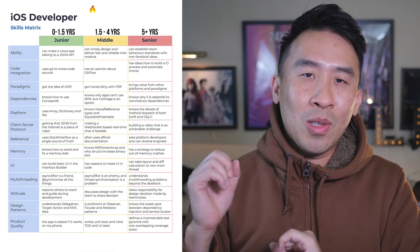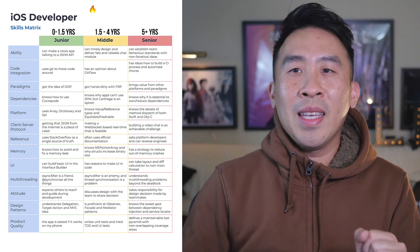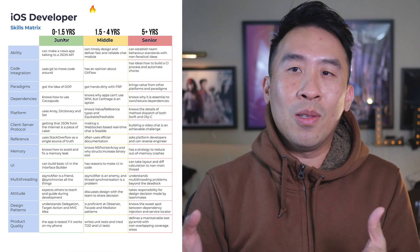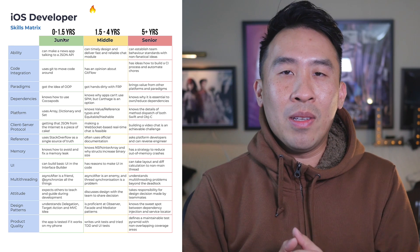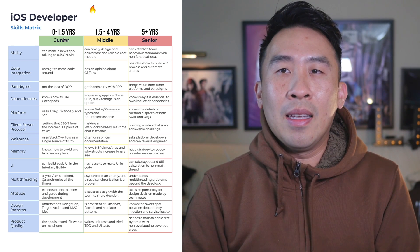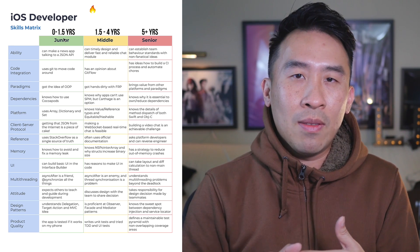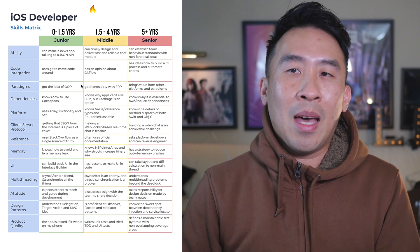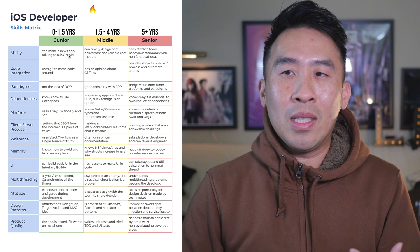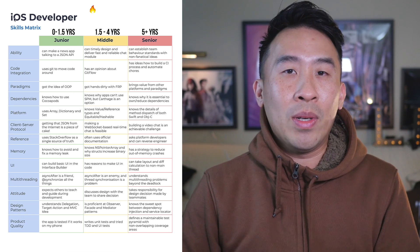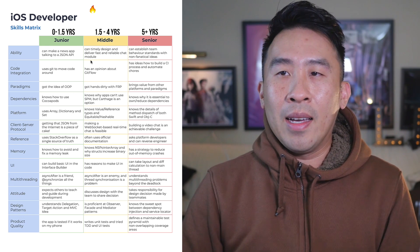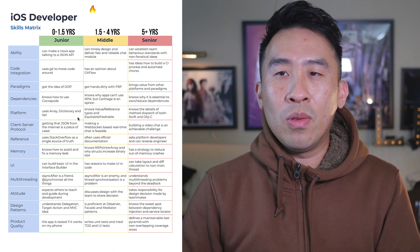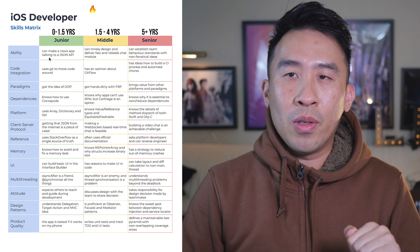I'm going to put up the skills matrix right over here. If you are interested in checking it out yourself, I'll put a link down in the description below. The developer, his name is Bodan Orlava, came up with this grid of topics that you should understand if you are a junior, mid, or senior level iOS developer. I found this grid to be pretty accurate in terms of determining what you know and what you should know as an iOS developer.